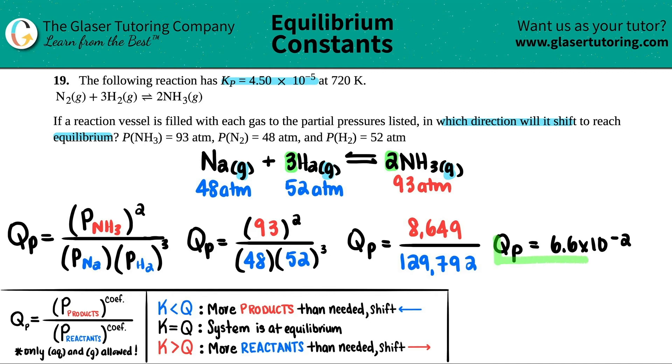Okay. So we got the Q value. The next thing we just have to do is remember, we always compare the Q value with the K value. Now there's a little trick here. So if you want to do the trick, you always put the Q value on the right-hand side of your K value.